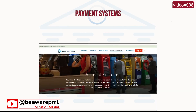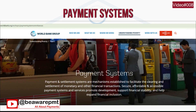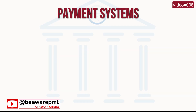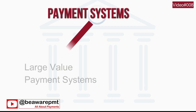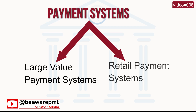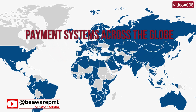As per the World Bank definition, payment and settlement systems are mechanisms established to facilitate the clearing and settlement of monetary and other financial transactions. There are two categories in the payment system: one is the large value payment system and the second is retail payment systems. Our focus will be on retail payment systems.